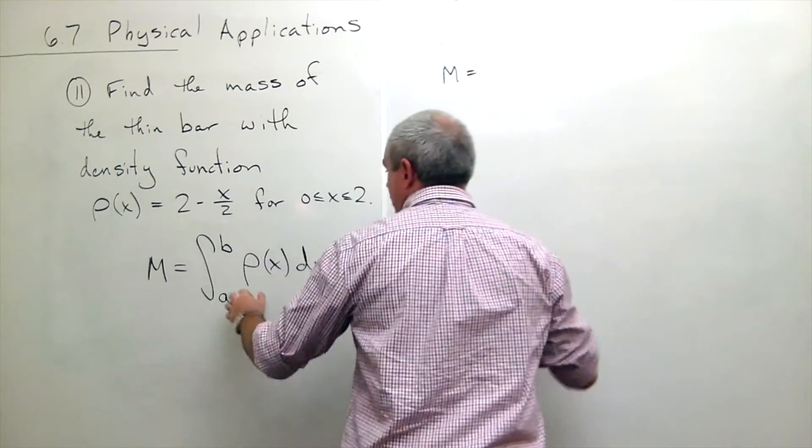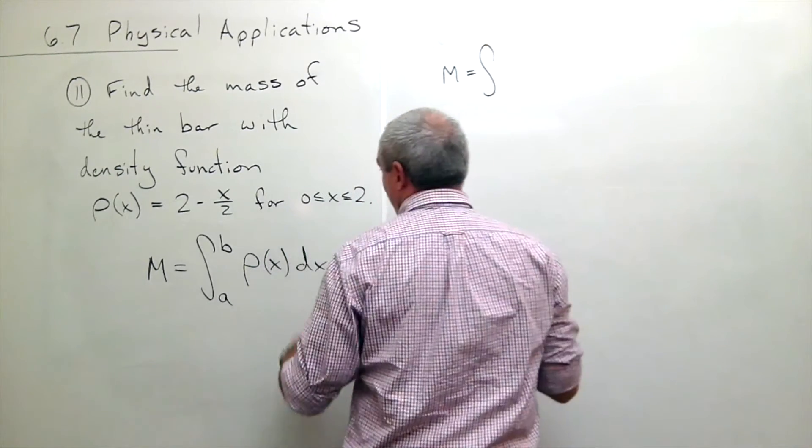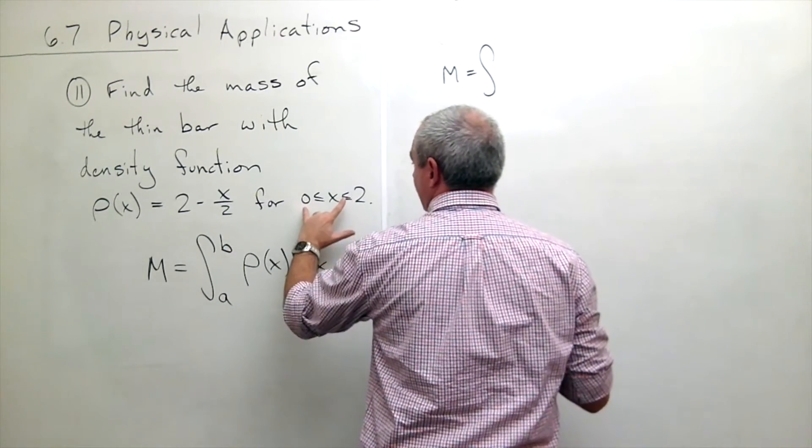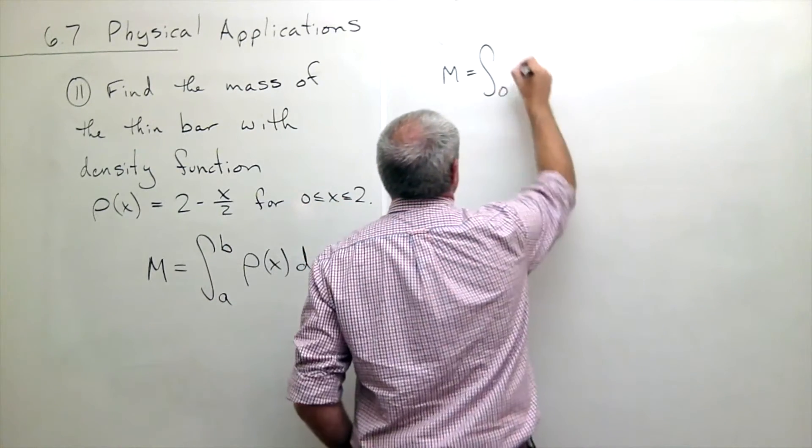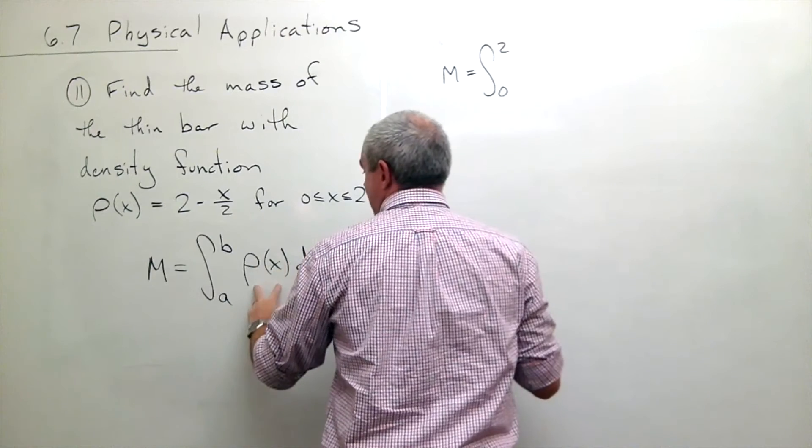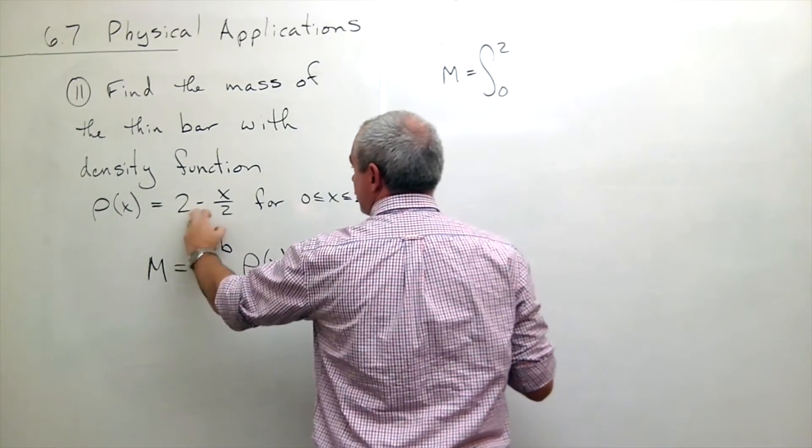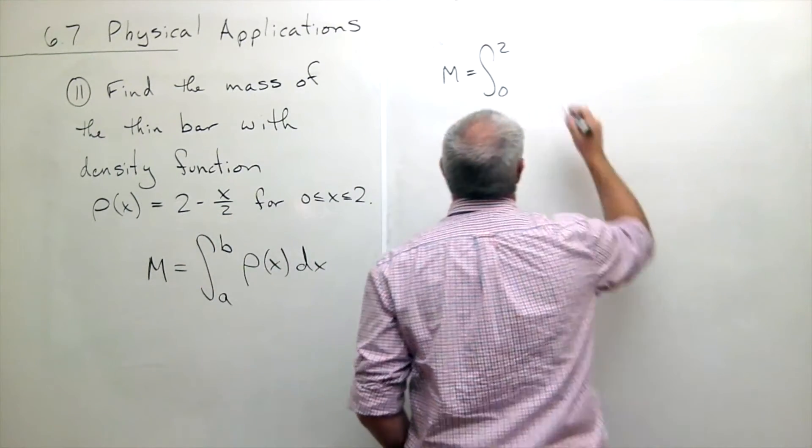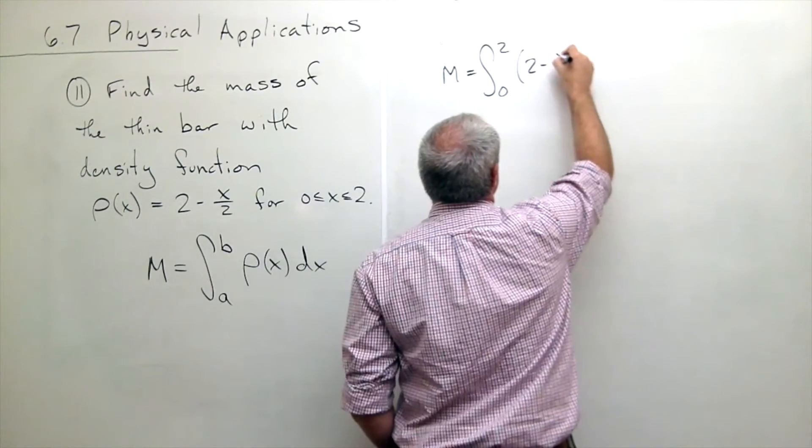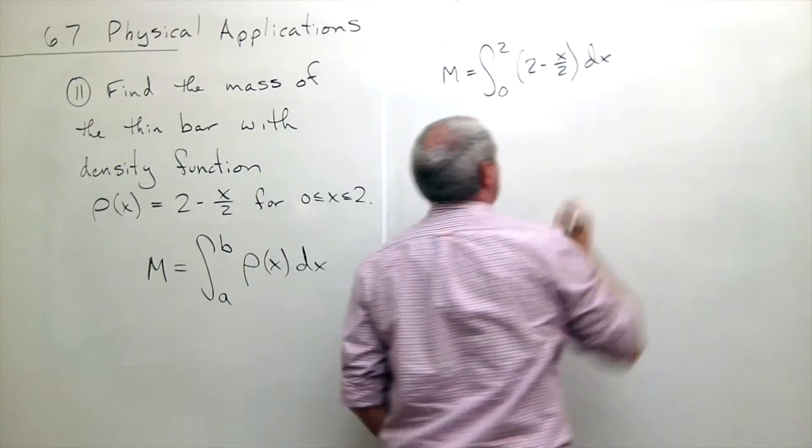Our mass is just going to be equal to the integral from a to b, or an x value to an x value, or 0 to 2, of our density function, which in this case is 2 minus x over 2 dx.